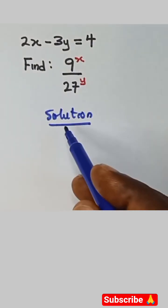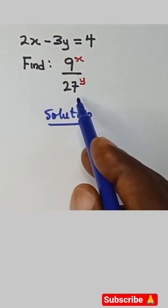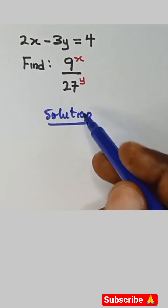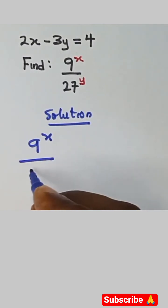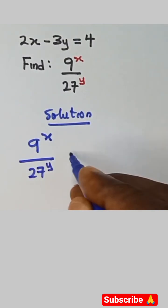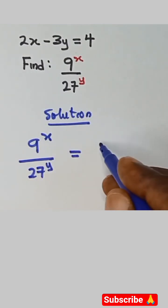We have 2x minus 3y equals 4, and we need to find 9 raised to power x over 27 raised to power y. Now, from 9 raised to power x over 27 raised to power y, we have both as multiples of 3.